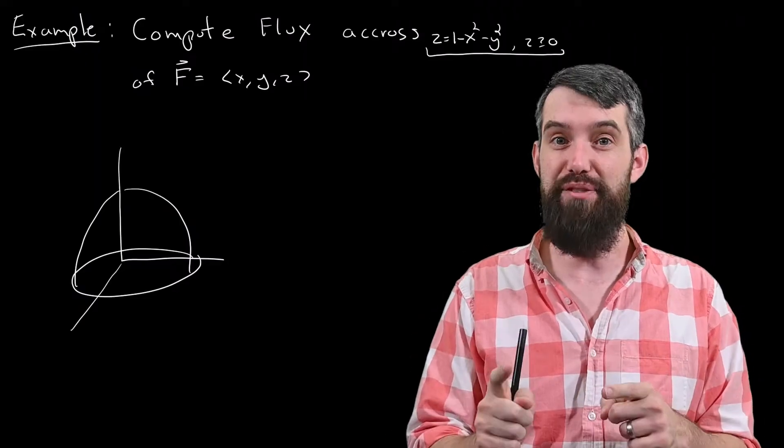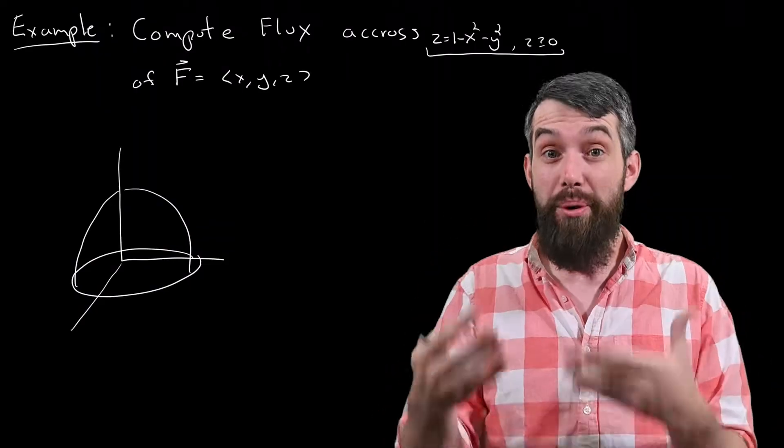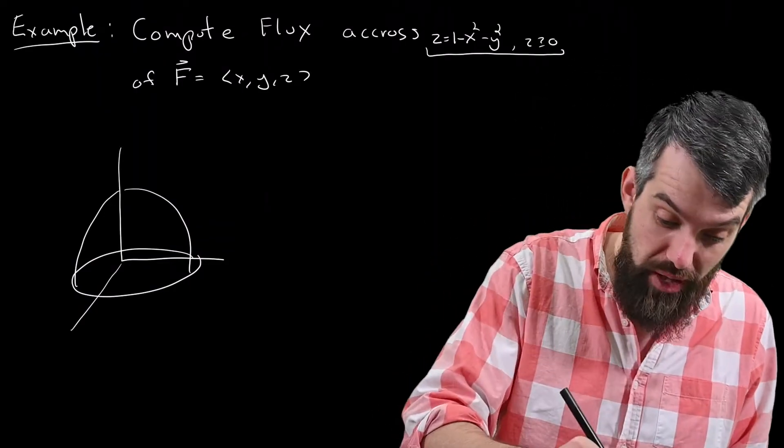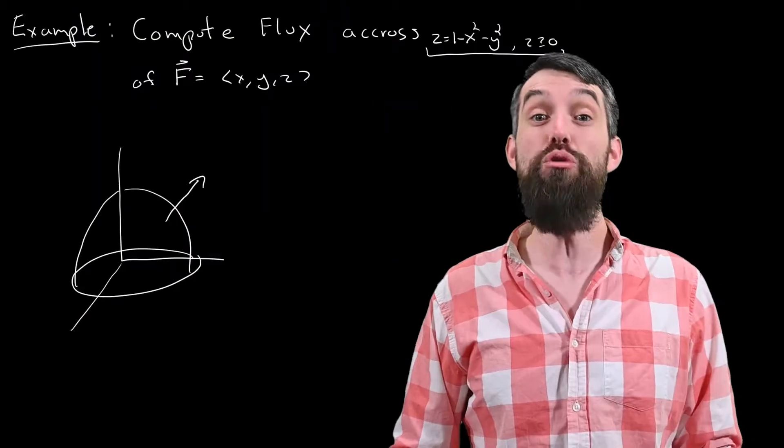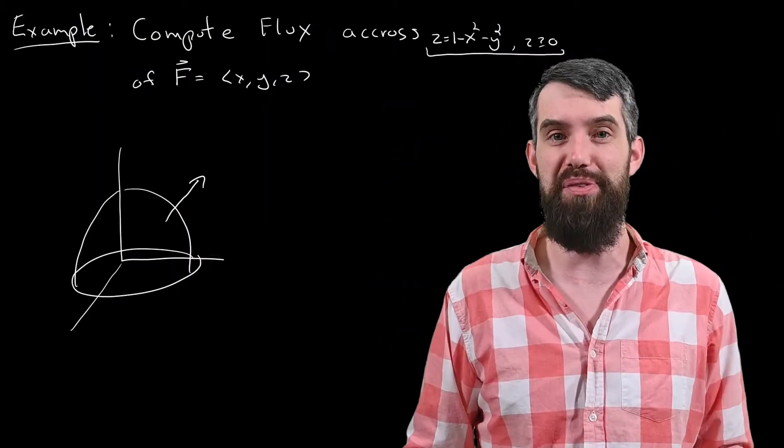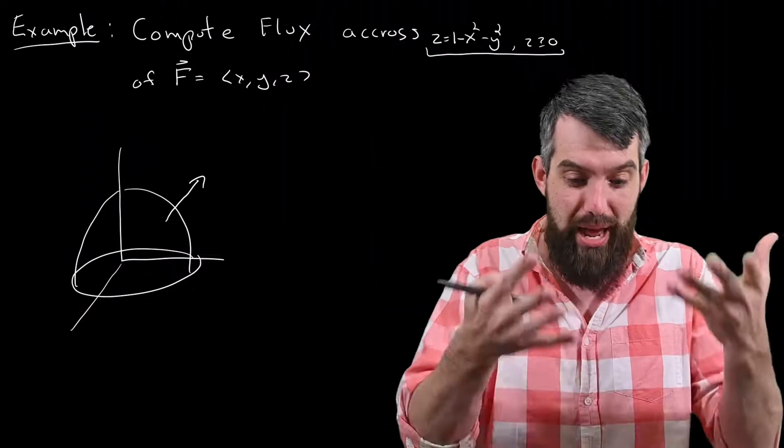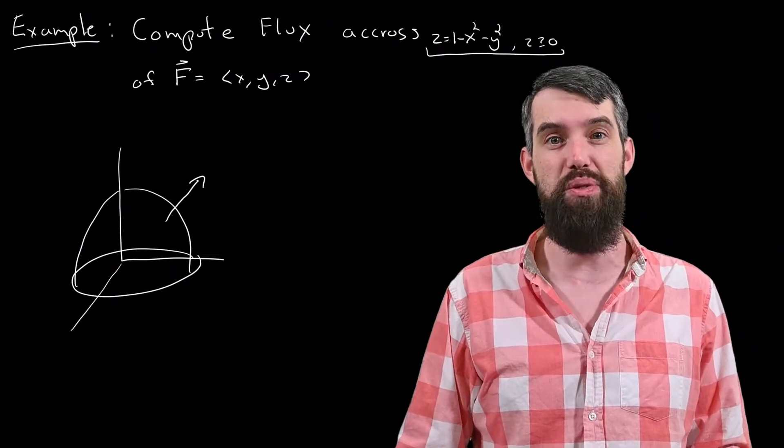Now the only thing I have to specify, which I haven't described in the problem itself, is which way am I orienting this particular surface. So I'm going to assert that I am orienting it with outward normals, outward from the perspective of starting at the origin and going out through the surface this way. I could have asked similarly what was the flux going the opposite direction, but I'm going to specify this is the interpretation that I mean.